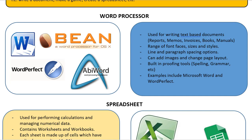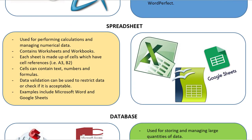Our next type of application software is called a spreadsheet. An example of a spreadsheet is Microsoft Excel. Spreadsheets are used for performing calculations, operations, and managing numerical data. They contain worksheets, which are individual screens made up of cells where you can type formulas, and workbooks, which are full spreadsheets made up of multiple worksheets. Data validation can be used to restrict data and check if everything is acceptable. Good examples include Microsoft Excel and Google Sheets.